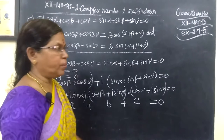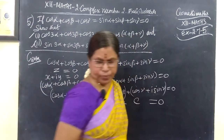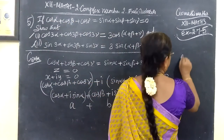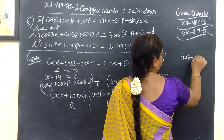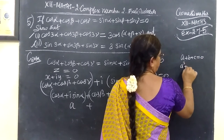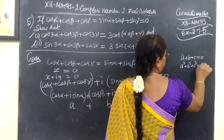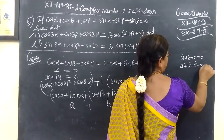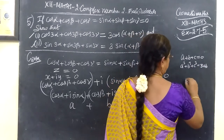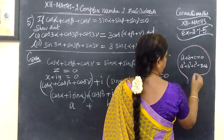So a + b + c = 0. This implies a³ + b³ + c³ = 3abc. This is one formula we will apply.